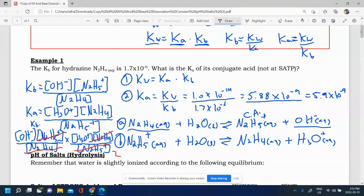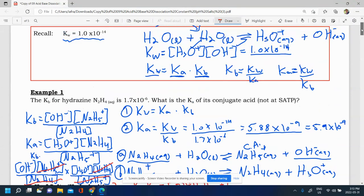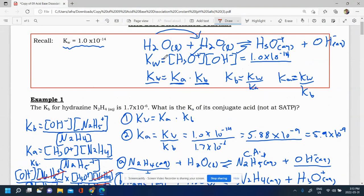And what you're left with is Ka times Kb. So we multiply together. You're left with the OH minus times the H3O plus. And if you remember, OH minus times H3O plus is your Kw.